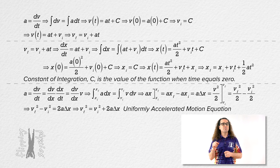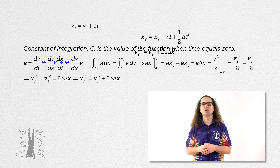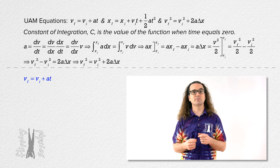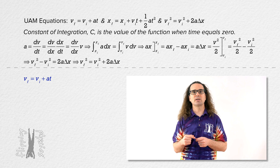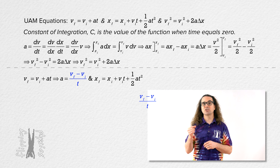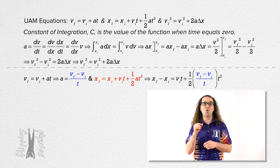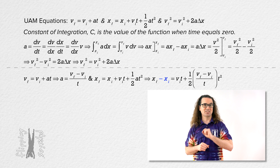Now, there is one more uniformly accelerated motion equation we can solve for. We can use two of the equations we just derived to derive a fourth UAM equation. Starting with velocity final equals velocity initial plus acceleration times time, we can rearrange that to solve for acceleration. Then we can substitute that into the equation position final equals position initial plus velocity initial times time plus one half acceleration times time squared, and subtract position initial from both sides.